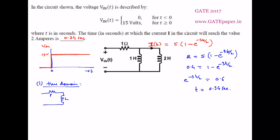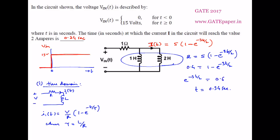In the time domain approach, we know that for any simple RL circuit — this is a simple RL circuit — whenever it is supplied by a constant voltage source, the current flowing through the inductor is expressed as I1(T) equals V by R into 1 minus e to the power minus T by tau, where tau is the time constant L by R. You must simplify the given circuit into a simple RL circuit. Since two inductors are in parallel, L can be represented as 1 henry parallel with 2 henry.